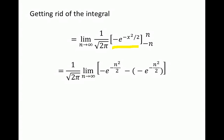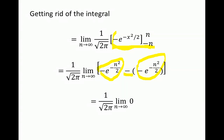For the upper bound we substitute n for x, and then subtract the expression evaluated at the lower bound negative n. Since we have (−n)² = n², this gives us minus e to the power of −n²/2 plus e to the power of −n²/2, which is zero. So the limit is just zero, meaning this whole expression equals zero.